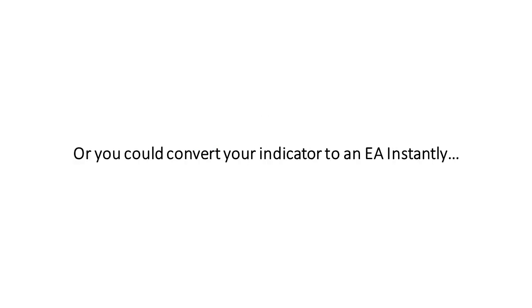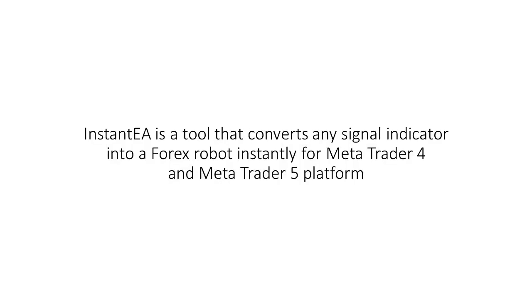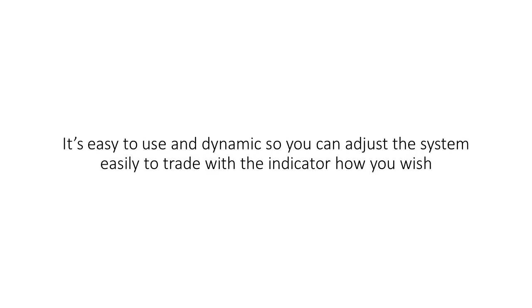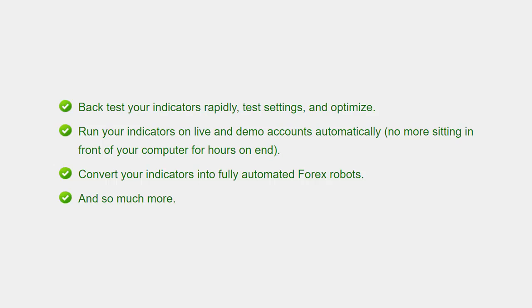Or you could convert your indicator into an EA instantly. Instant EA is a tool that converts any signal indicator into a forex robot instantly for MetaTrader 4 and MetaTrader 5 platforms. It's easy to use and dynamic, so you can adjust the system easily to trade with the indicator how you wish. Instant EA allows you to backtest your indicators rapidly, test settings and optimize, and run your indicators on live and demo accounts automatically — no more sitting in front of your computer for hours on end.